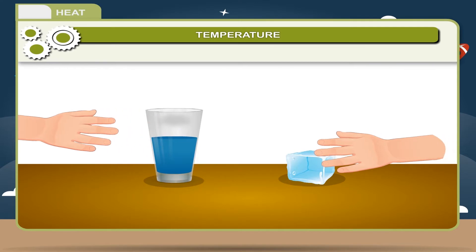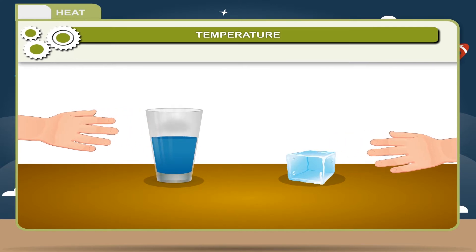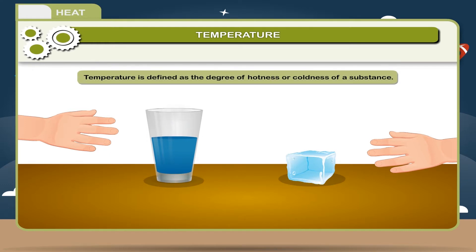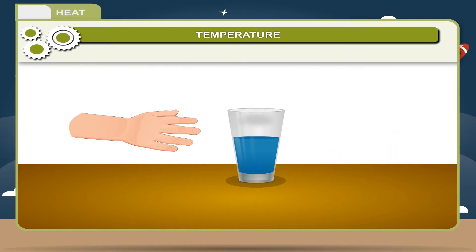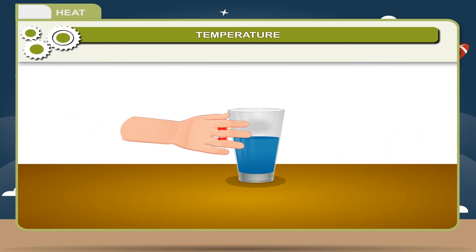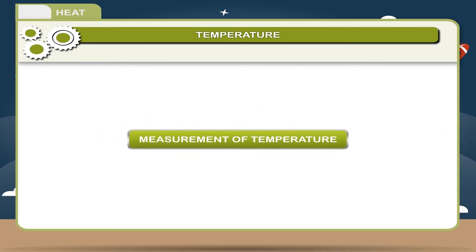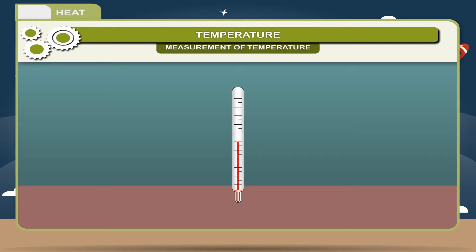Temperature: when we touch hot water and ice we feel the coldness of ice and hotness of water. Temperature is defined as the degree of hotness or coldness of a substance. When two bodies are at different temperatures and brought into contact with each other, heat flows from the hot body to the cold body. The flow of heat will continue until the temperature of both bodies becomes equal.